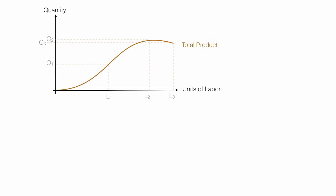And this is the total product curve. The brown line is a total product curve, again, holding capital fixed or constant.